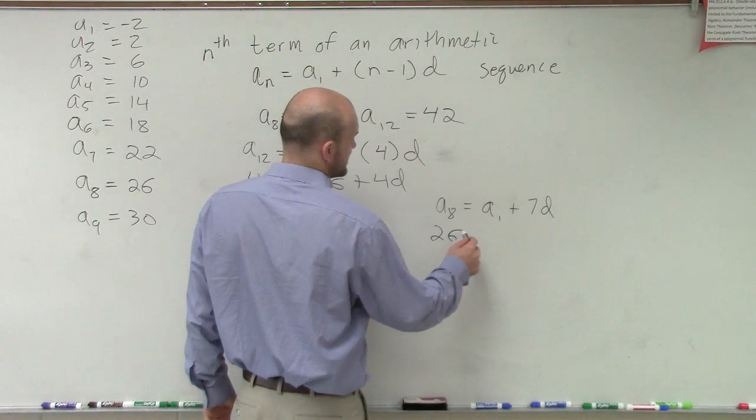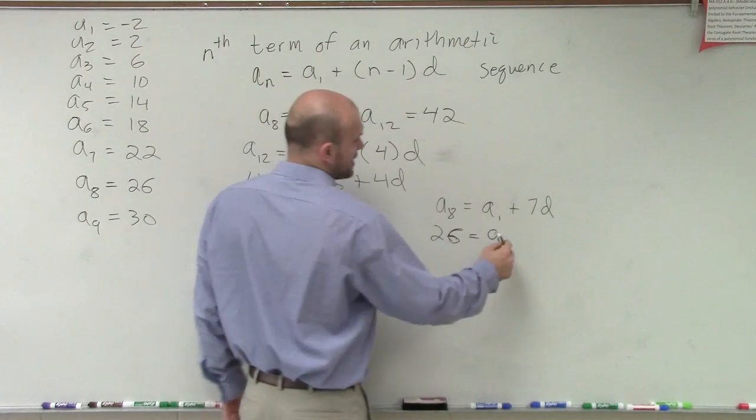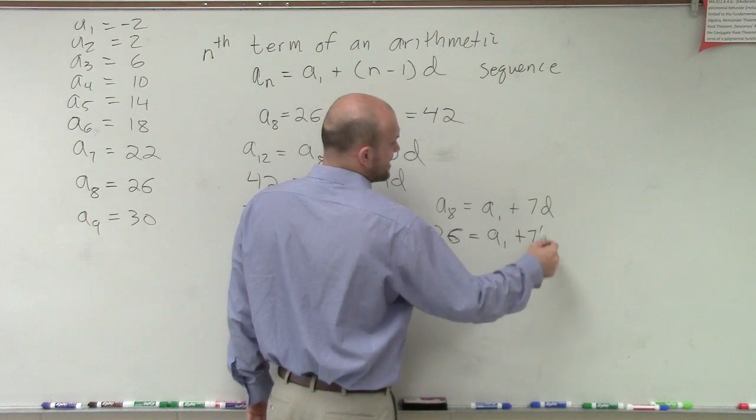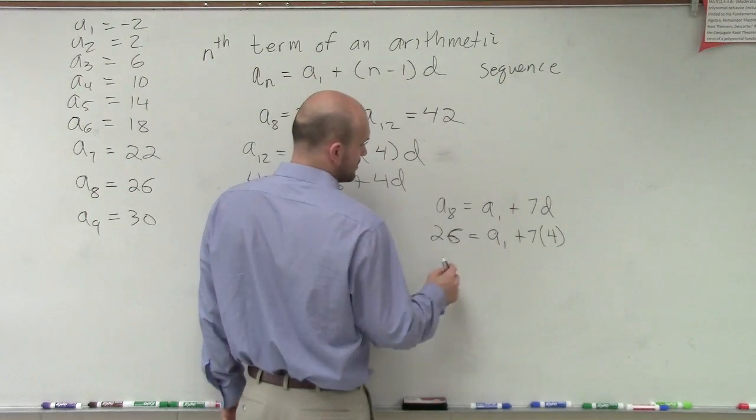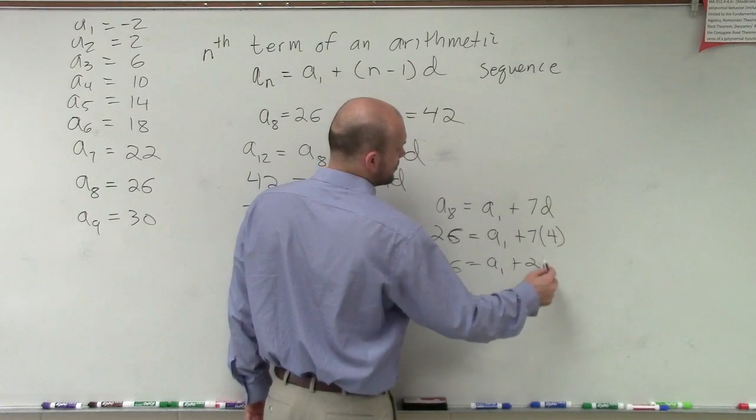A sub 8 is 26 equals a sub 1, which we're trying to figure out, plus 7 times our difference, which is 4. So we have 26 equals a sub 1 plus 28.